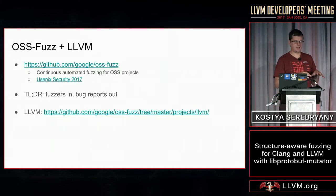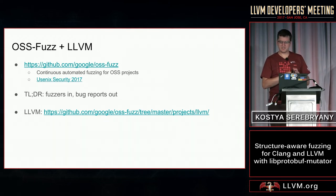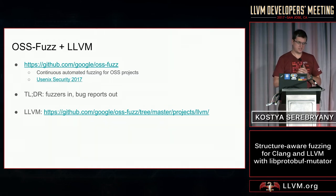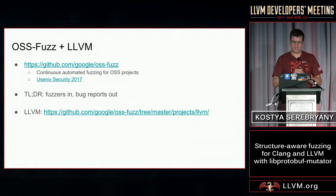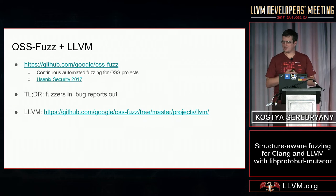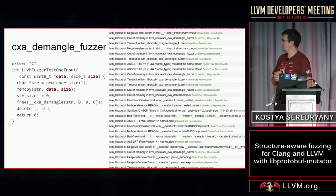Luckily, there is a service called OSSFuzz, and I'm one of those who built this service. The service is continuous automated fuzzing for open source software. If you're interested in more details, here is the GitHub link and there is a link for my talk at USENIX Security earlier this year. In short, this is a black box where you put fuzzers and get bug reports out. LLVM is already integrated with this service, so we get some interesting things out of it.